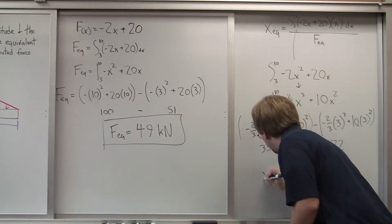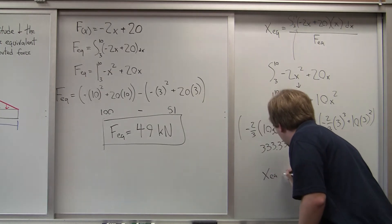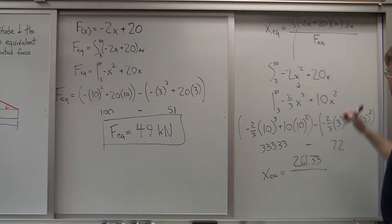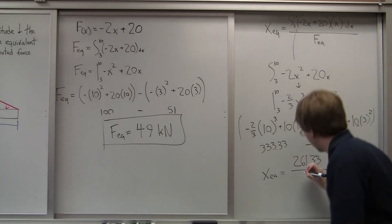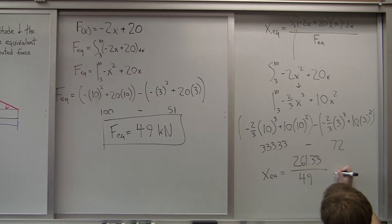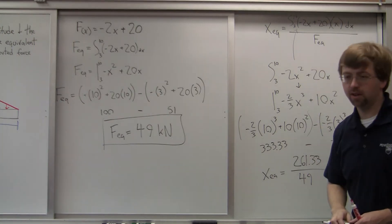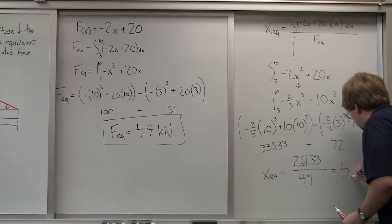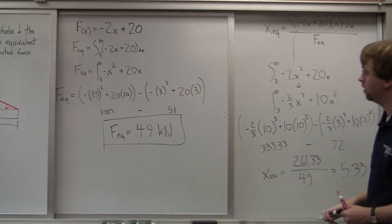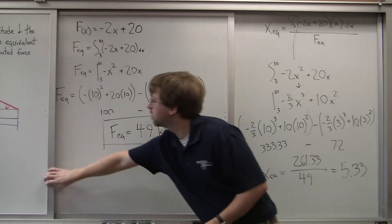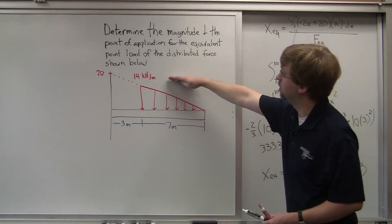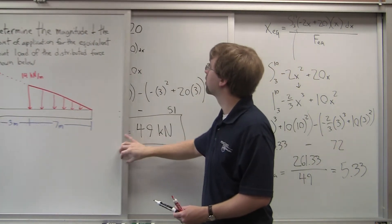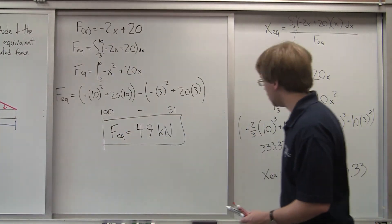So XEQ equals the numerator 261.33 divided by FEQ, which is 49. That gives us a distance of 5.33. The units from our original scenario are meters, so our distance is 5.33 meters.